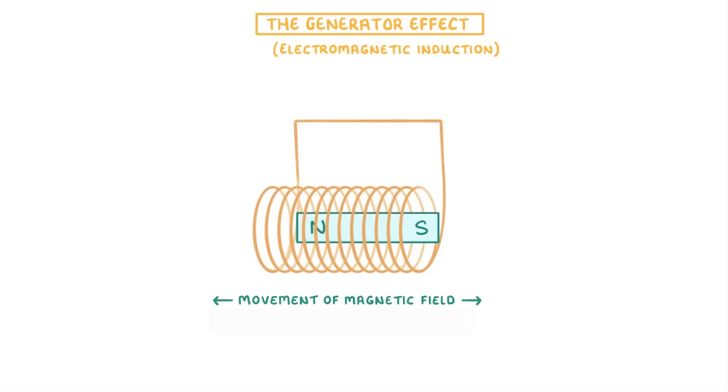And because the circuit is complete, this generates a current. Also like before, whenever we change the direction of the magnet, it changes the direction of the current.